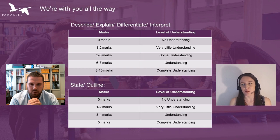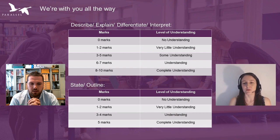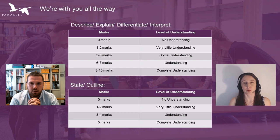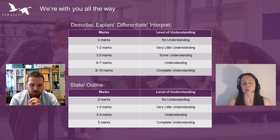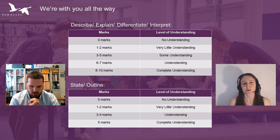The key thing to remember with this grid is your answer must relate to the question. If the question asks you to explain the differences and you haven't addressed differences in your answer, you won't get into the 8 to 10 mark banding — you'll only be getting 1 to 2 marks or zero. You must make sure you're answering the question in relation to those command verbs.